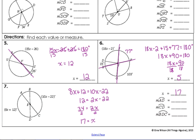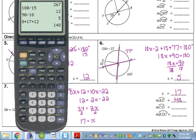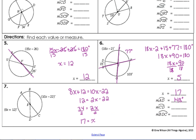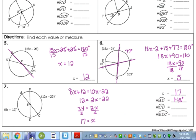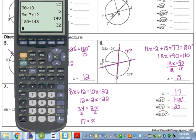The measure of AD, we just need to plug it back in. 8 times 17 plus 12 is 148 for our AD. CD? 180 minus 148 is 32 degrees.